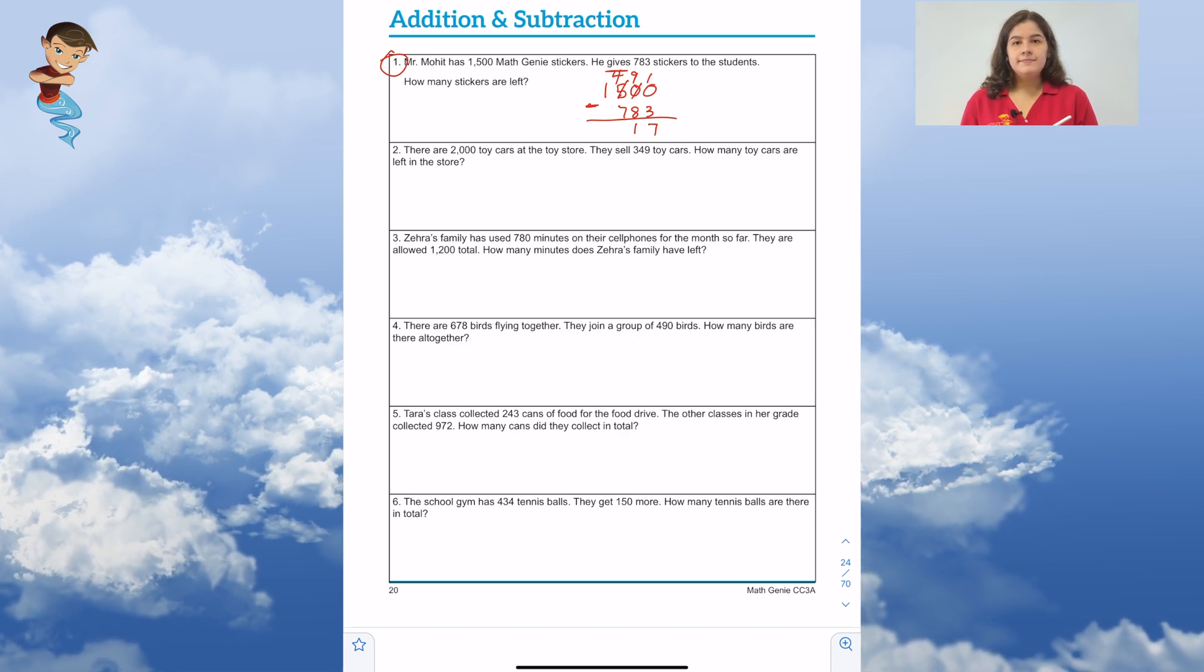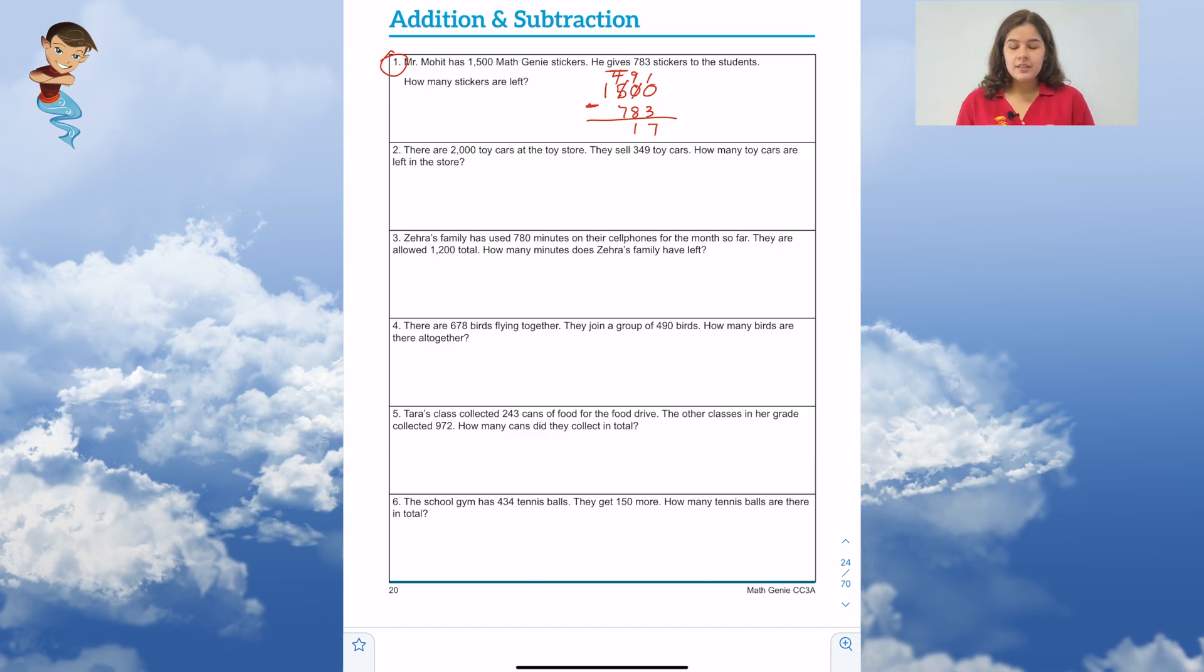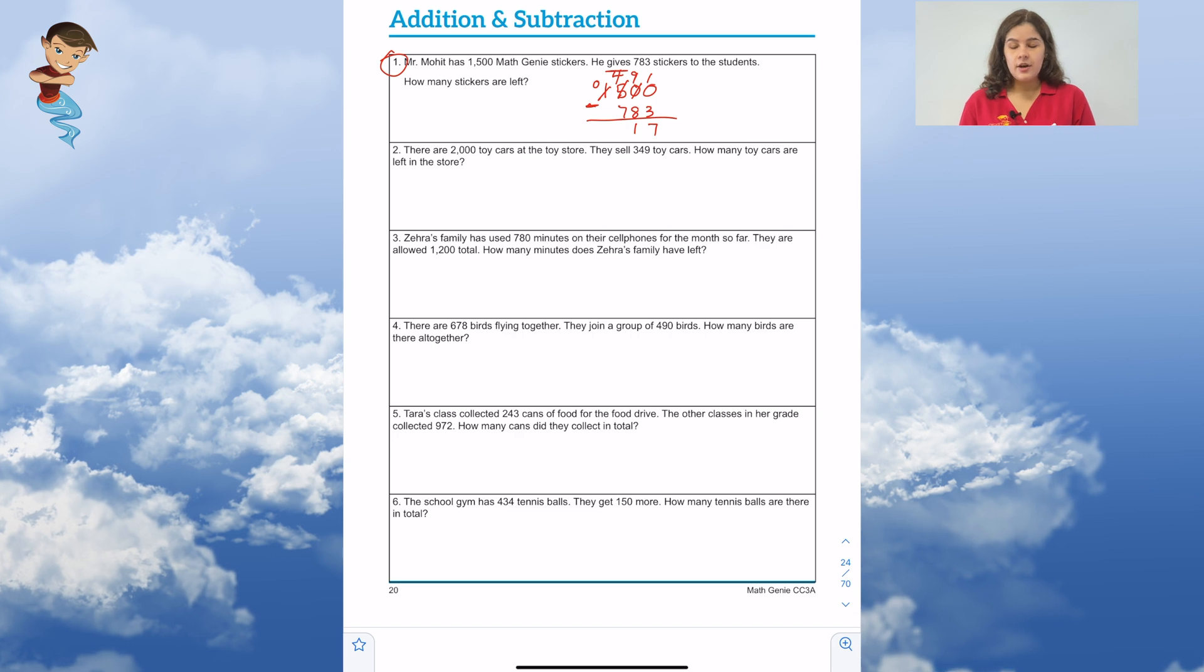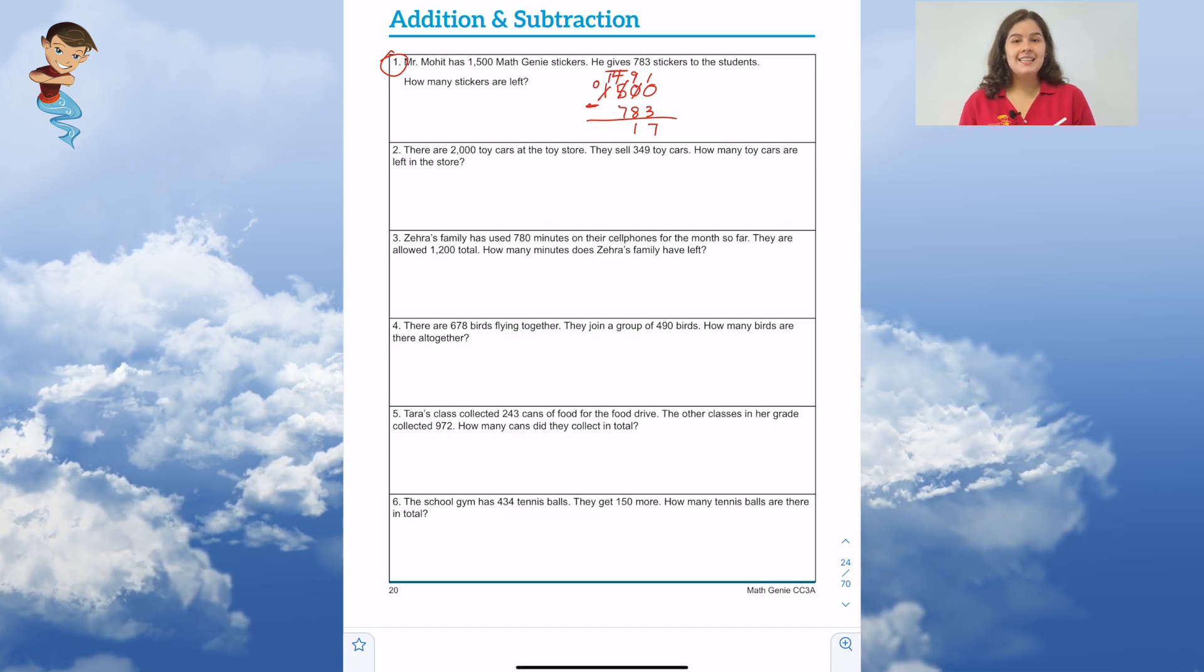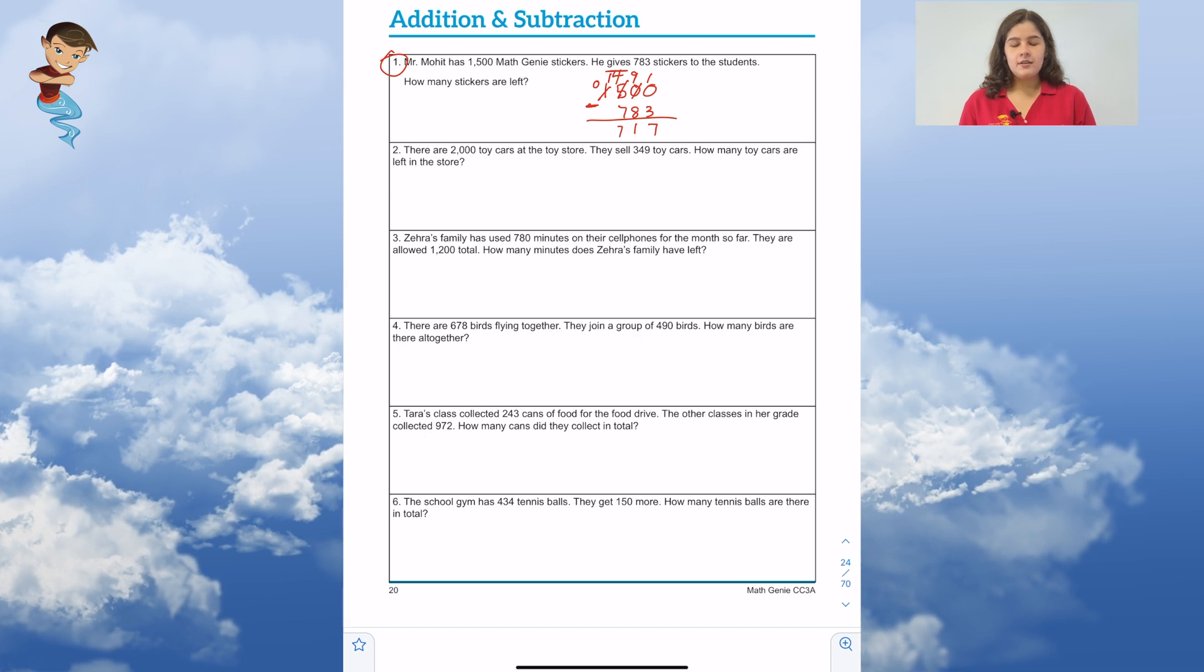We have 4 minus 7. We can't do 4 minus 7 because 4 is less than 7. So we have to borrow from our thousands place. We borrow 1 from our 1, which gives us 0. And now we have 14 minus 7, which is perfect. And we have 7 as our answer.